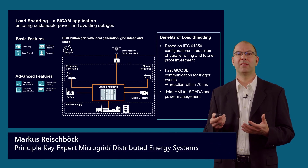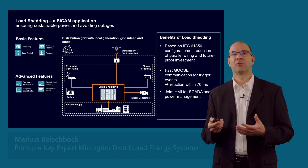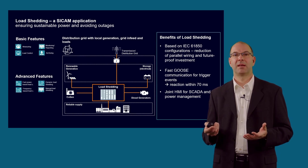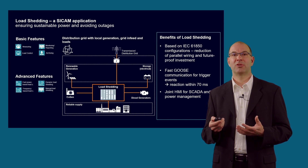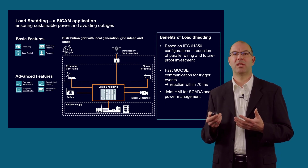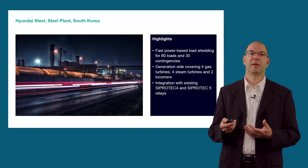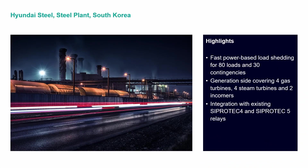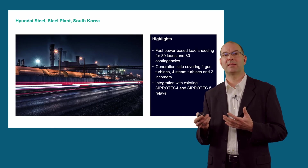Load shedding can be fully integrated with the generation control HMI to provide an overarching power management system. The SICAM A8000 load shedding application supports fast, dynamic, and frequency-based load shedding for up to 600 loads. A good example is the Hyundai Steel plant in South Korea, where we combined our SICAM A8000 load shedding application with SIPROTEC 4 and SIPROTEC 5 IEDs to automate shedding of around 80 loads, considering 30 contingencies — meaning 30 different scenarios of loss of their four gas and steam turbines and their two incomers.